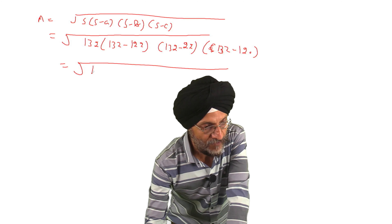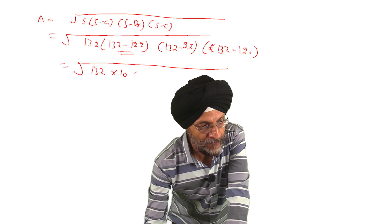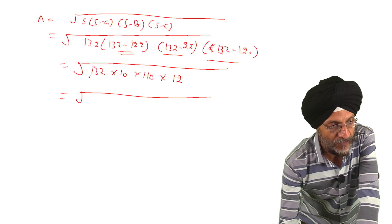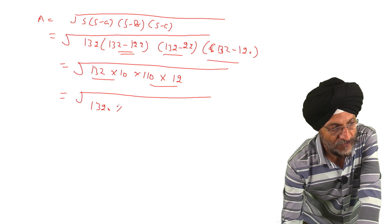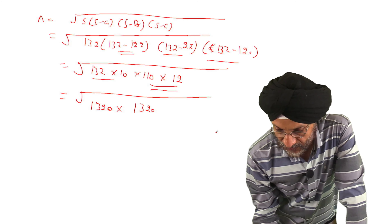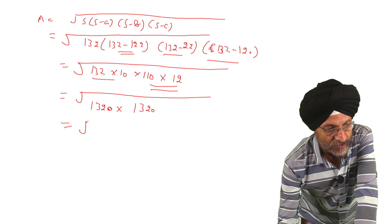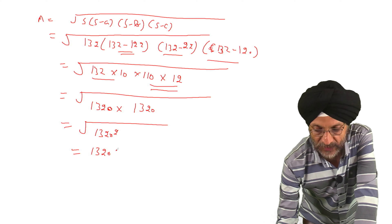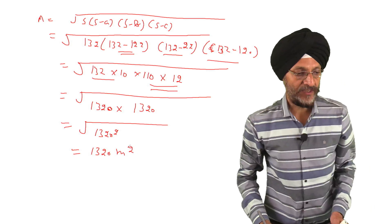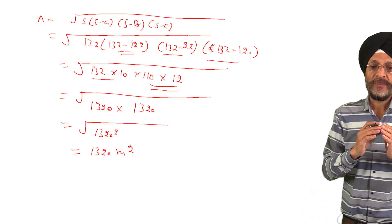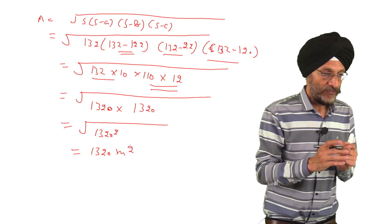We compute: 132 × 10 = 1320, and 110 × 12 = 1320. So the expression becomes √(1320 × 1320) = 1320. Therefore, the area of the triangular wall = 1320 square metres. This is the area of the portion where the advertisement is to be fixed, and the rent is to be charged for this area.